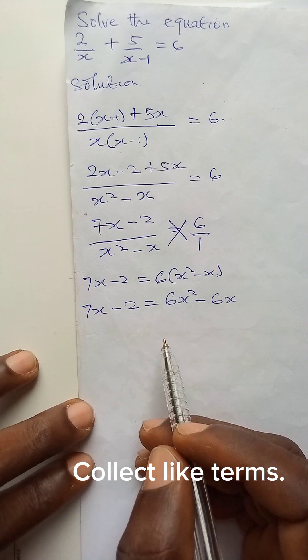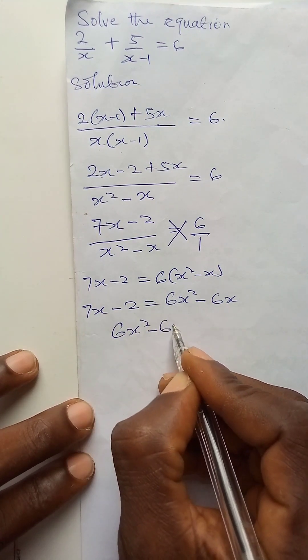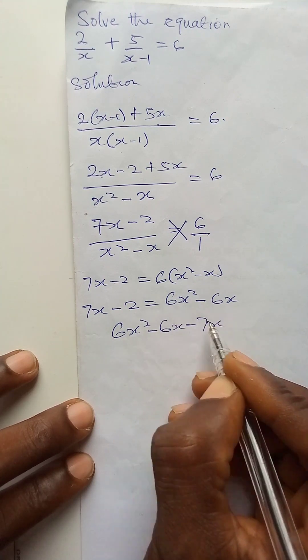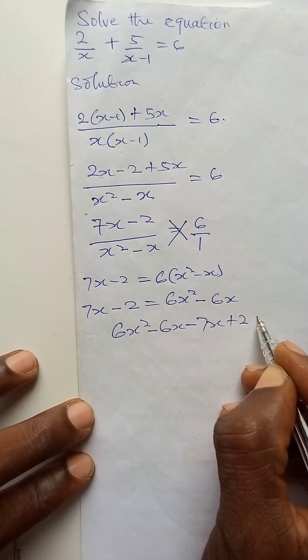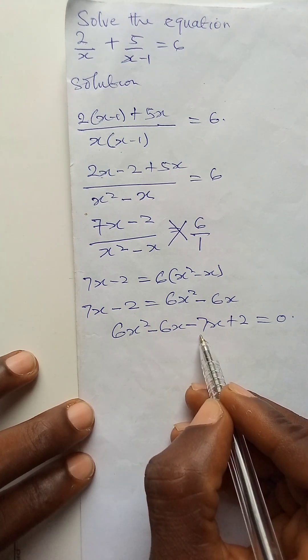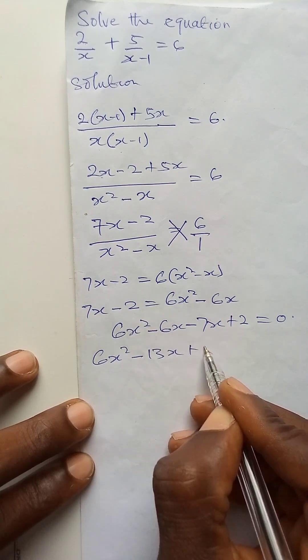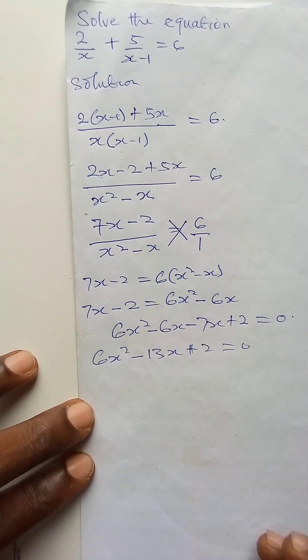Then let us collect like terms. We now have 6x squared minus 6x minus 7x plus 2 is equal to 0. Minus 6x minus 7x will give us minus 13x plus 2 is equal to 0. So this is a quadratic equation.